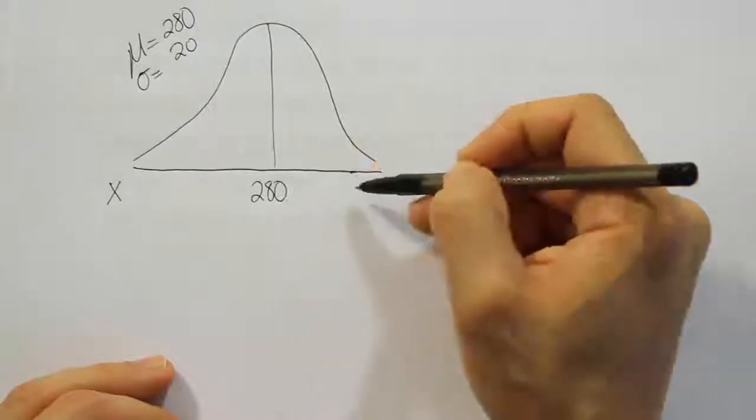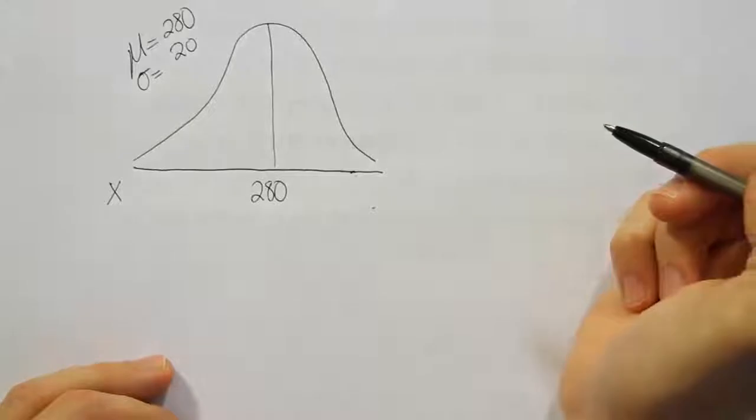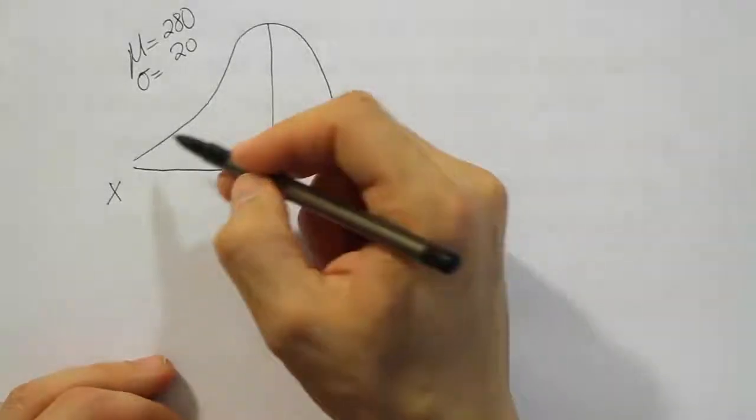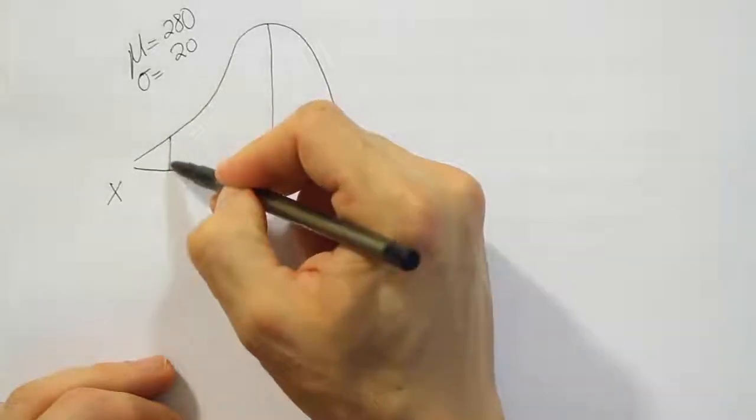Because these would be the pregnancies that are longer than average. They're more than 280 days. So the shortest length then would be over here somewhere, right?